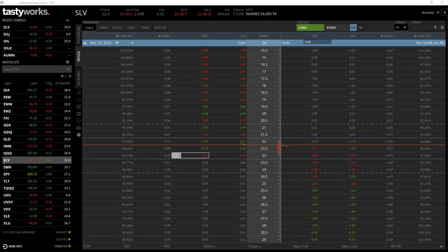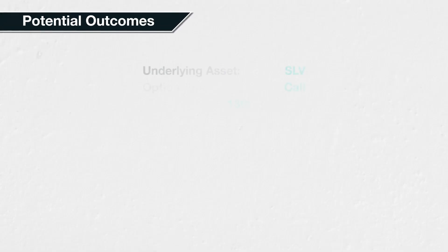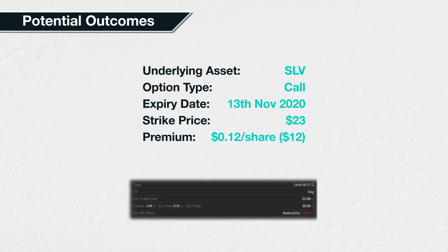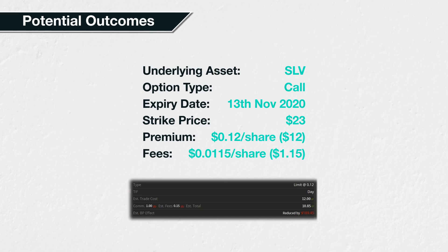We can use the Section 3 lectures to calculate our potential profit, potential loss, and where the break-even point is. The underlying asset is shares of SLV, the option type is Call, the expiry date is 13th November 2020, and the strike price is $23. The option premium is 12 cents per share, or $12 total. The total fees and commission were $1.15. As the contract multiplier for SLV is 100, each option contract represents 100 shares. We sold one contract representing 100 shares, so the total fee of $1.15 equates to a per share fee of $0.0115, or a little over one cent.